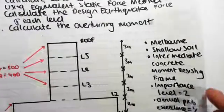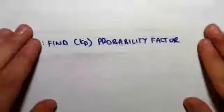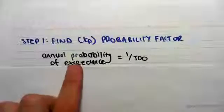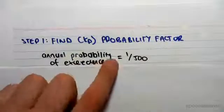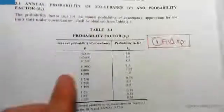In this video we're going to be finding the earthquake design category. So step one is finding kp, the probability factor. Now we've been told that the annual probability of exceedance is one in 500, so we go to table 3.1.